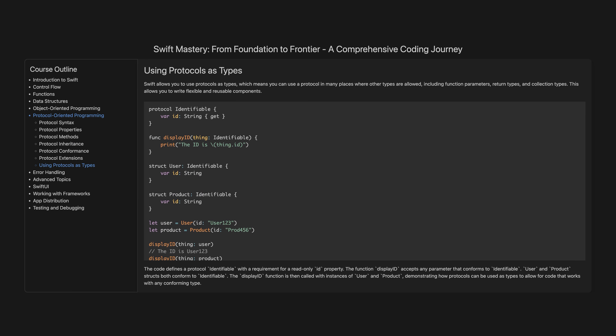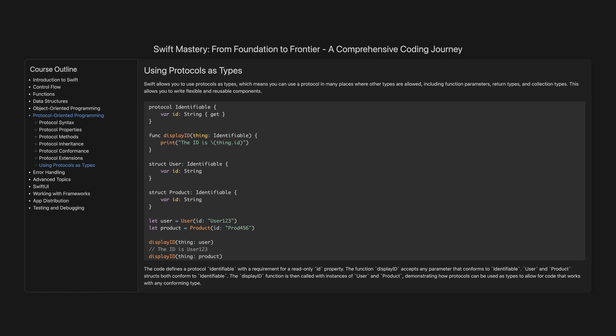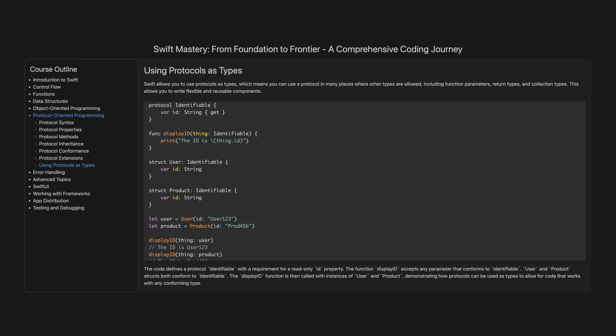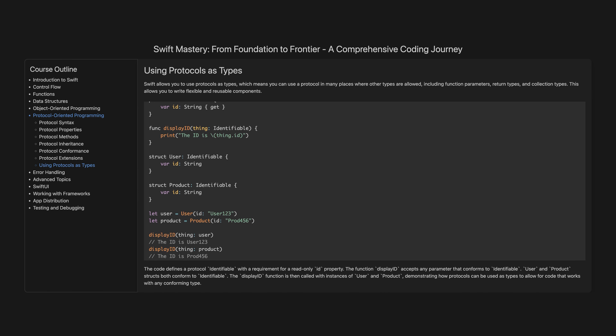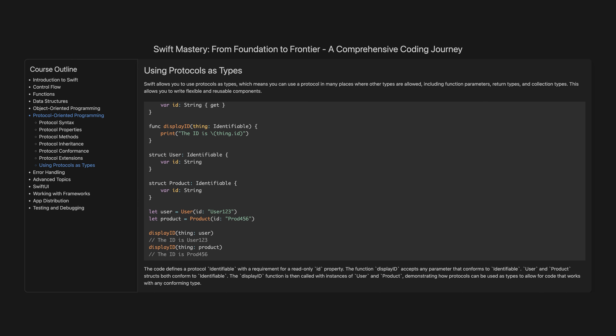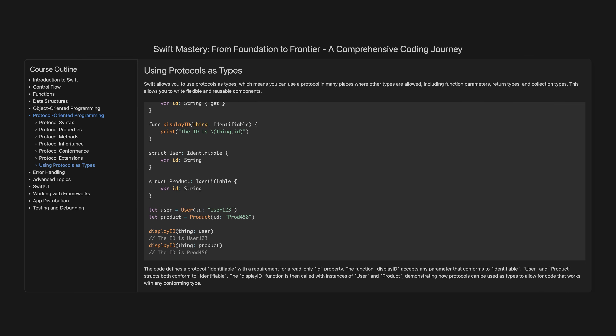Using protocols as types. Swift allows you to use protocols as types, which means you can use a protocol in many places where other types are allowed, including function parameters, return types, and collection types, allowing you to write flexible and reusable components. The code defines a protocol Identifiable with a requirement for a read-only id property. The function displayID accepts any parameter that conforms to Identifiable. User and Product structs both conform to Identifiable. The displayID function is then called with instances of User and Product, demonstrating how protocols can be used as types to allow code that works with any conforming type.